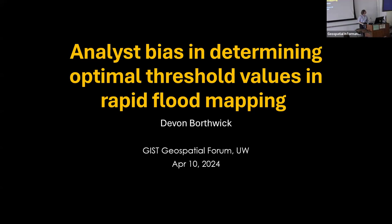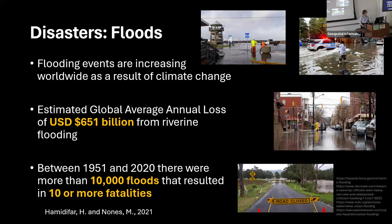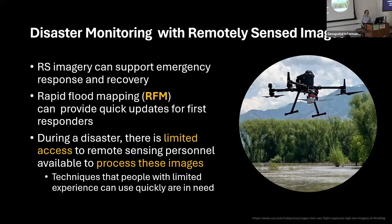My research is on determining analyst bias when determining optimal threshold values in flood mapping. Some background on floods: they are increasing worldwide as a result of climate change — we're seeing an increase in the amount happening per year and their intensity. There has been an estimated global average annual loss of $651 billion just from riverine flooding, not accounting for urban or coastal flooding. Between 1951 and 2020, there were more than 10,000 floods that resulted in 10 or more fatalities. Remote sensing can be used to support the response and recovery during these events.